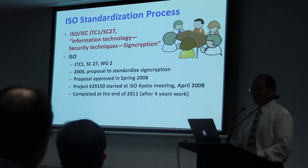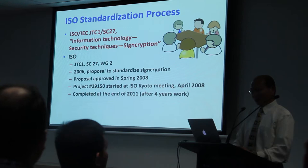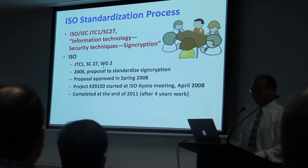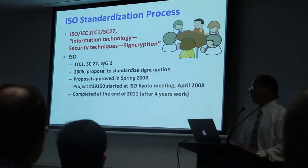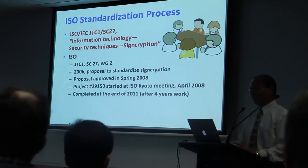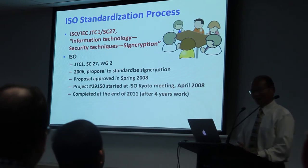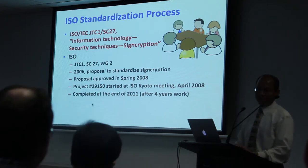Each country has one vote — it doesn't matter how big or small the country is. However, votes have different weights depending on how actively that country is involved in the process. If your country is highly involved, your vote counts as a full vote. What I was associated with was called SC27, Working Group 2, which is where all the encryption technologies are standardized. They started looking into signcryption in 2006, and in 2008 the whole process was kick-started. Finally it was completed at the end of 2012 — four years of effort.